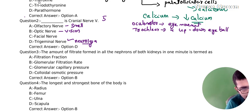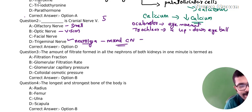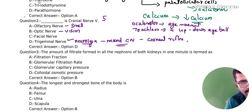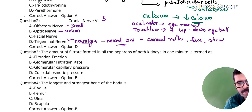Then trigeminal (5th cranial nerve) — it is a mixed cranial nerve. Functions include corneal reflex, face sensation, and chewing.